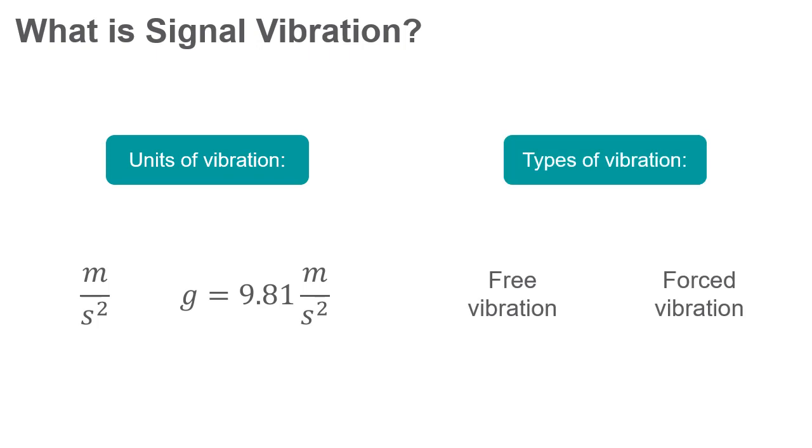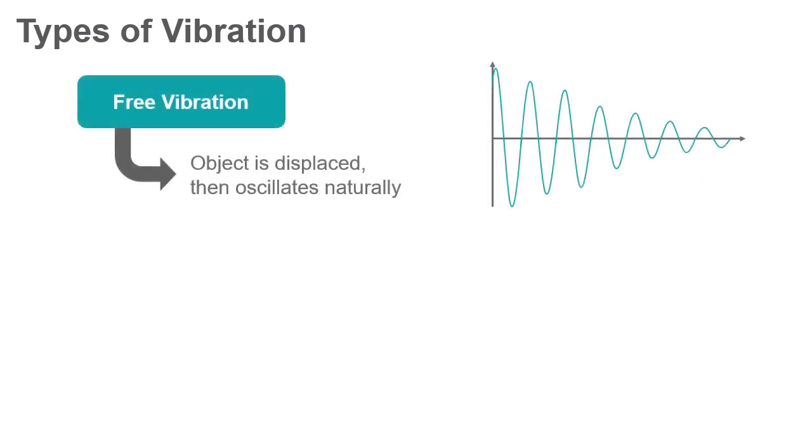An object can vibrate in two ways: free vibration and forced vibration. Free vibration occurs when an object or structure is displaced or impacted, and then allowed to oscillate naturally. For example, when you strike a tuning fork, it rings and eventually dies down.